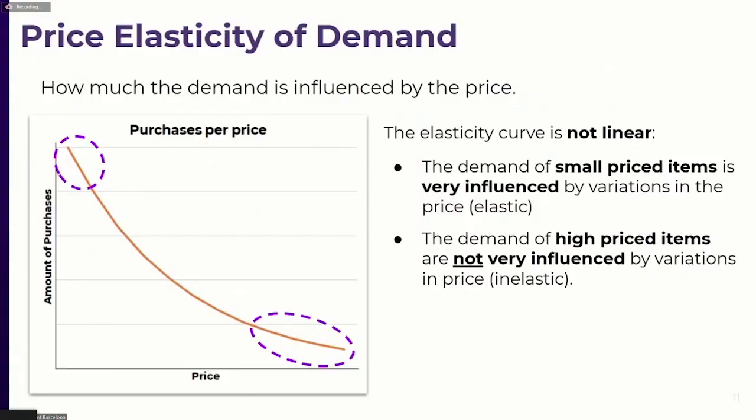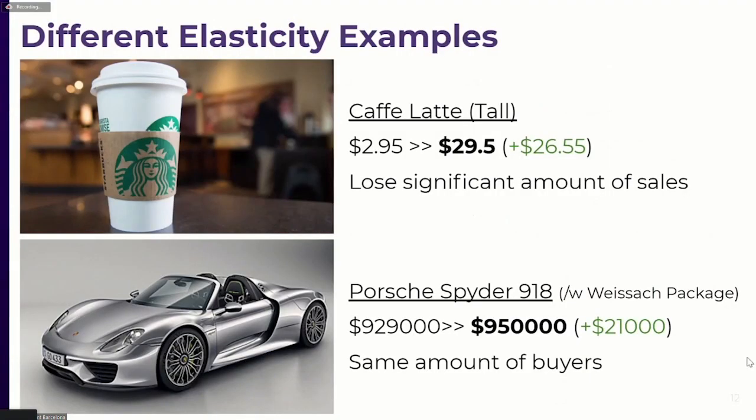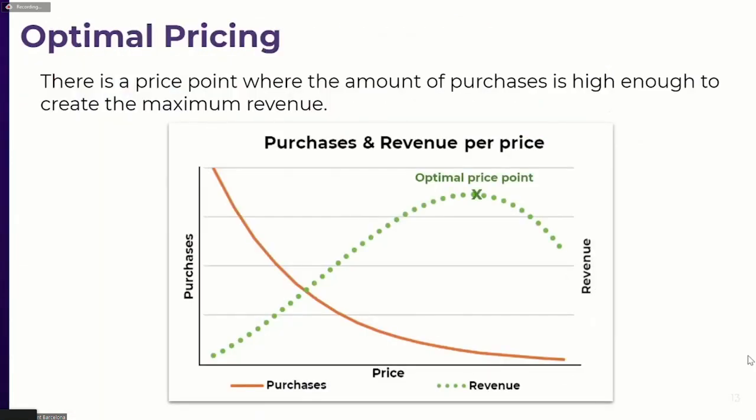One interesting thing about the price elasticity of demand curve is that it's not linear — it's a curve. Small changes in the price of low-priced items generate a lot of effect on demand; that area is very elastic. Changes at the high end of the spectrum don't generate many changes in demand — those prices are inelastic. This makes complete sense in the real world: multiply the price of a coffee by ten and you lose many buyers, but rounding up the cost of a supercar doesn't change the number of buyers much.